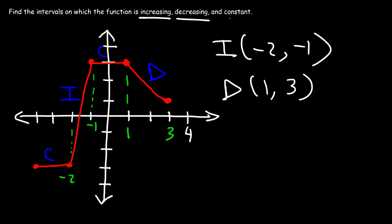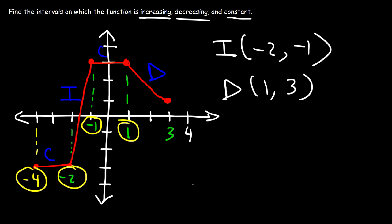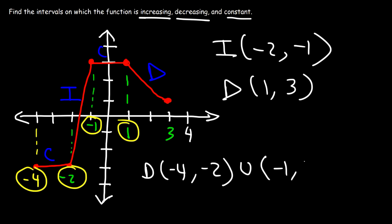Now when is the function constant? It's constant starting from negative 4 to negative 2, and then again from negative 1 to 1. So for the first part it's constant from negative 4 to negative 2, and then using union we connect it to the second part where it's constant from negative 1 to 1.